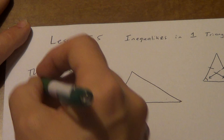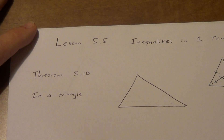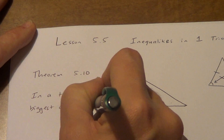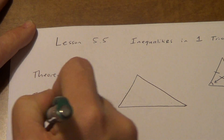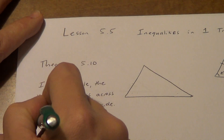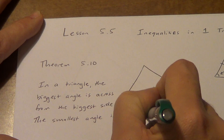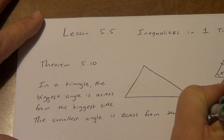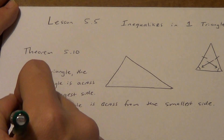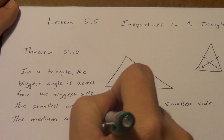Here's basically what Theorem 5.10 says: in a triangle — and this only works in one triangle, not two separate triangles — the biggest angle is across from, or opposite, the biggest side. And the smallest angle is across from the smallest side. That would leave us with the medium angle, which is across from the medium side.